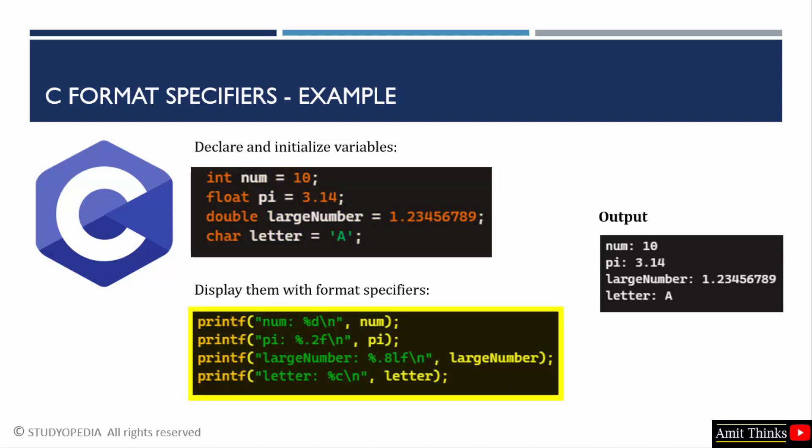So, when you will print it, to print in C, you need to add the format specifiers. Like, to print the num, num is an integer variable here. We have used the %d.